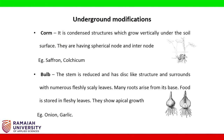Bulb: the stem is reduced and has a disc-like structure, surrounded by numerous fleshy scaly leaves. Many roots arise from its base. Food is stored in the fleshy leaves and they show apical growth. Examples: onion, garlic.